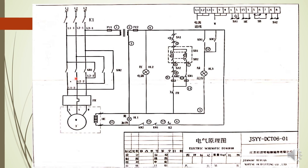To understand how KM1 and KM2 are closed, we look at the control circuit. Power is taken from L1 and L3. This fuse protects the control circuit. There is a step-down transformer — 440 volts to 220 volts — because the control circuit requires less power. FU2 is the fuse for protection of this control circuit. This is the common line and this is the main line. Power comes through the FU2 fuse, and the indication lamp shows that power is present in the control circuit.